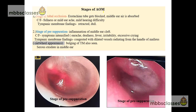The stages of acute otitis media are divided into five stages. The first stage is the stage of tubal occlusion. In this stage, the eustachian tube gets blocked. Because of the blocking of the eustachian tube, the middle ear air is absorbed. This leads to the development of negative pressure in the tympanic cavity and the tympanic membrane gets retracted. On examination, the tympanic membrane will be retracted and dull in appearance. The clinical presentation in this stage is fullness or mild ear pain and slightly decreased hearing, but there will not be any fever.